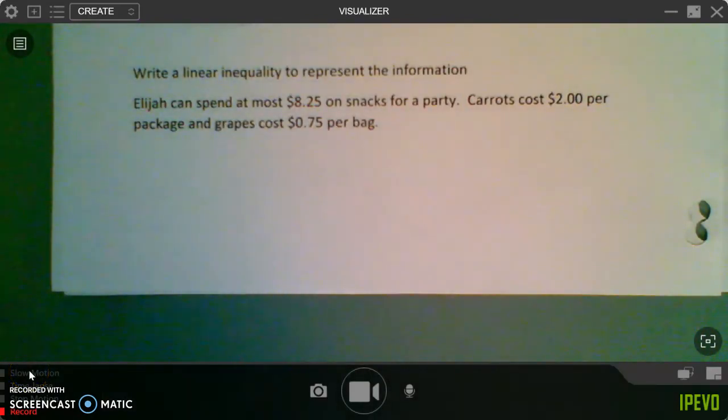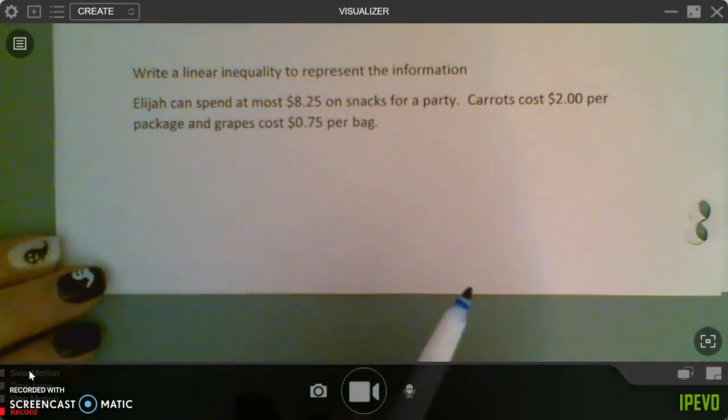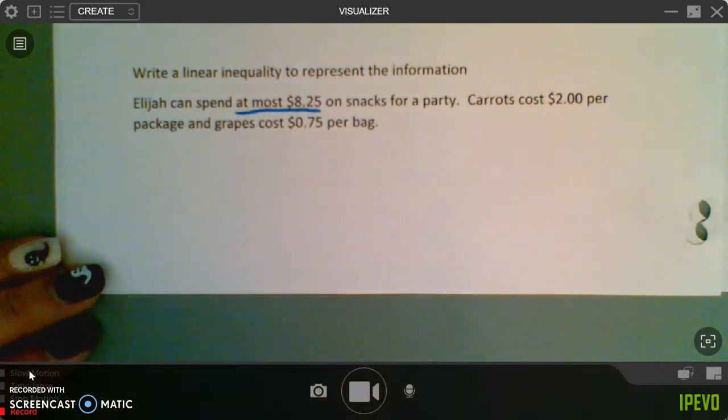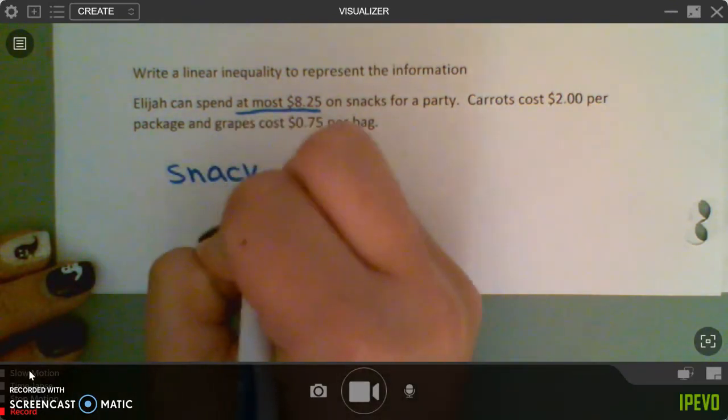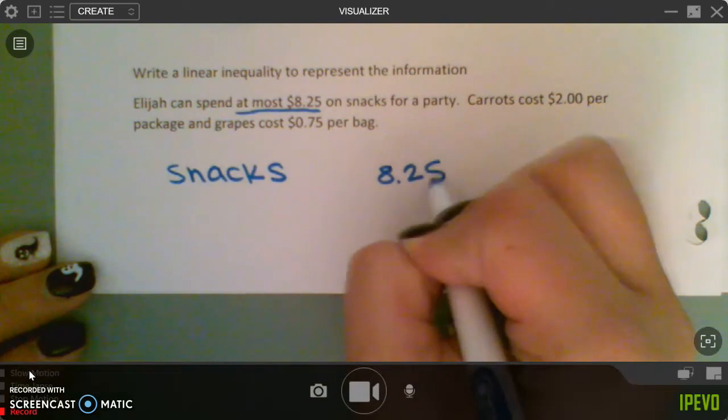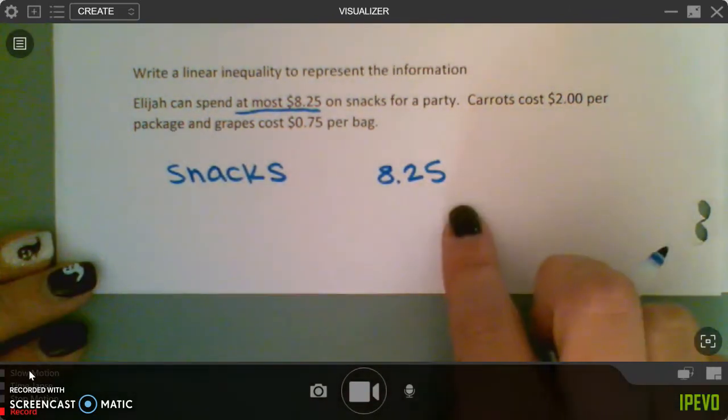So we have one more problem. It says write the linear inequality to represent the information. So, Elijah can spend at most $8.25 on snacks, carrots cost $2, and grapes cost $0.75. So, we have these snacks he's buying, and we have the money he has to spend. Can the cost of the snacks be more than the money he has? No.